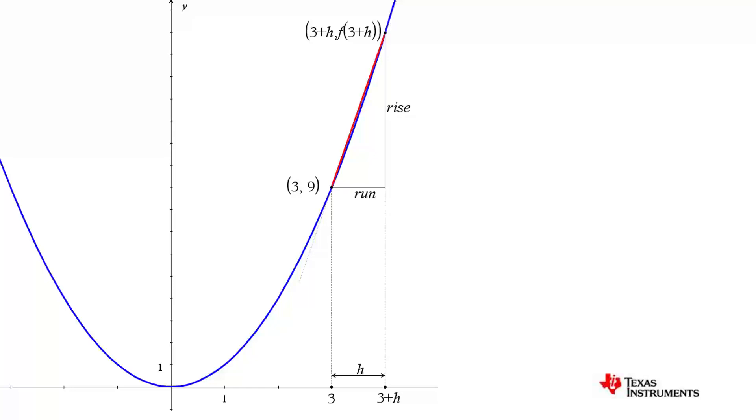Now we have the coordinates of the two points, we can calculate the gradient of the line segment, or secant, as h approaches 0.